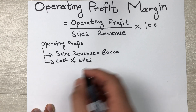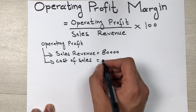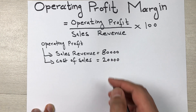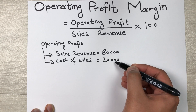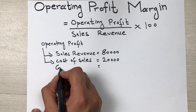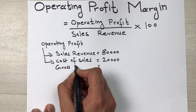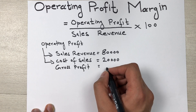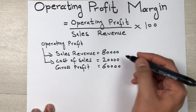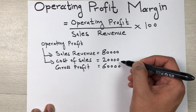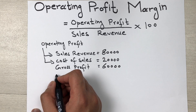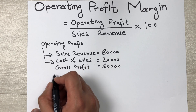For example, our cost of sales is 20,000. What we have to do is deduct the sales revenue by 20,000, then we will get our gross profit. So gross profit is equal to 60,000 — we deduct 20,000 from 80,000. It will also include other operating costs as well.